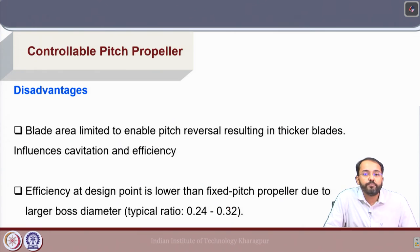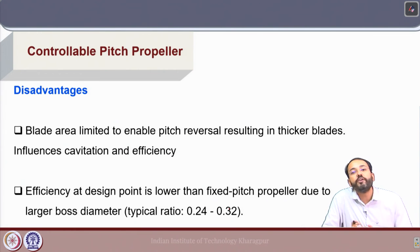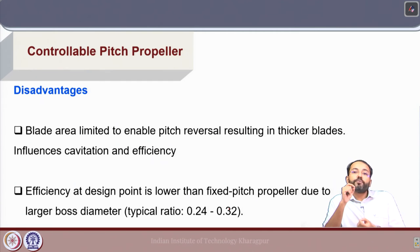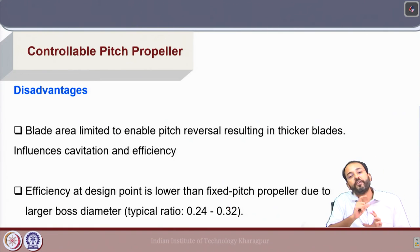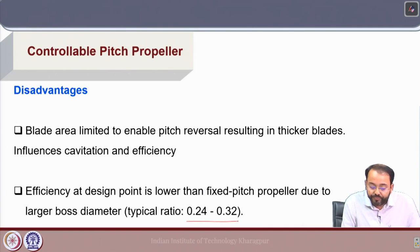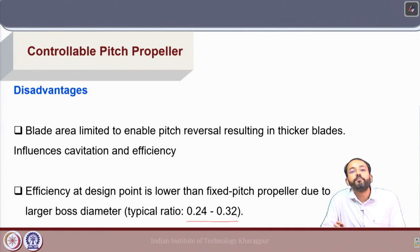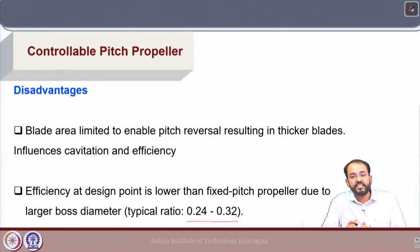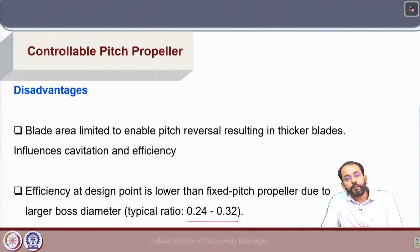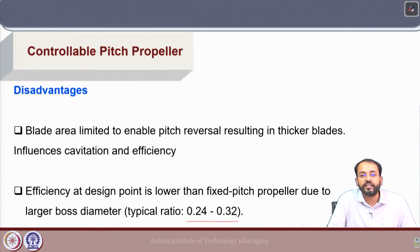Regarding efficiency at the design point, comparing a CPP to an equivalent fixed pitch propeller of the same diameter: the FPP will require a smaller hub diameter, whereas the CPP, due to the pitch control mechanism, requires a larger boss diameter — typically in the range of 0.24 to 0.32 times the propeller diameter. Because of this, the available area for propeller blades is less, and the efficiency at the design point for a CPP will be lower compared to the equivalent fixed pitch propeller.